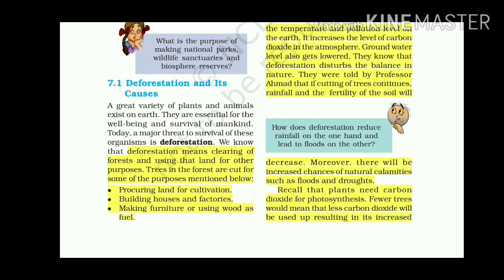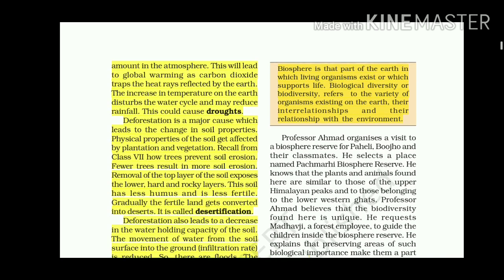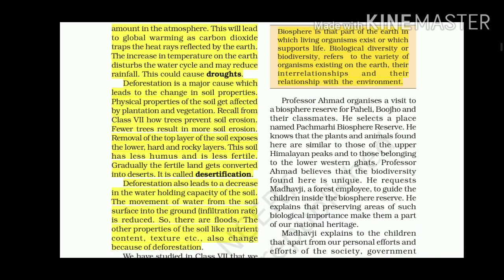Plants need carbon dioxide for photosynthesis. Fewer trees mean less carbon dioxide is used up, resulting in increased amounts in the atmosphere. This leads to global warming, as carbon dioxide traps heat rays reflected by the Earth. The increase in temperature disturbs the water cycle, may reduce rainfall, and could cause droughts.